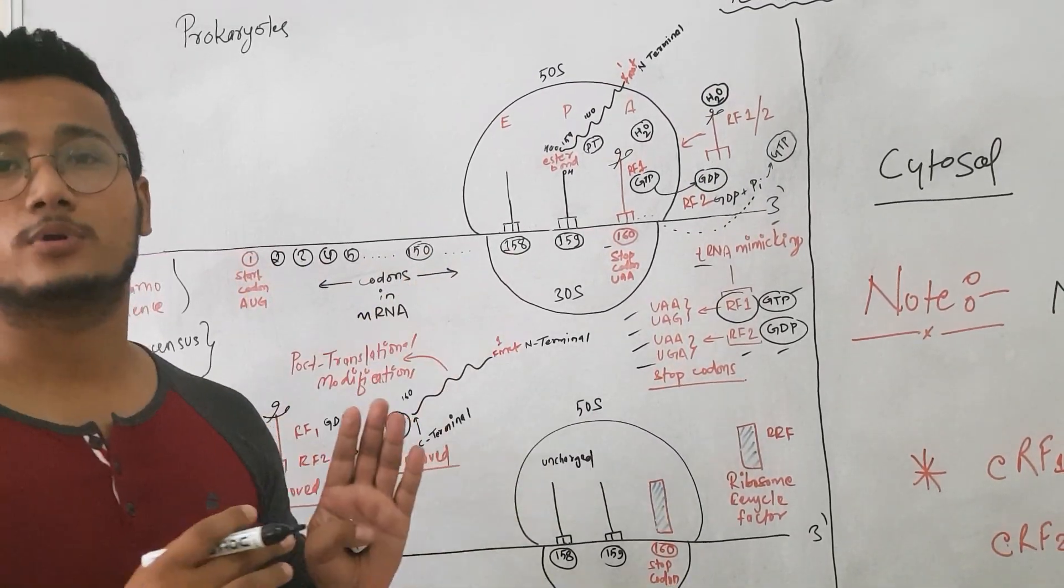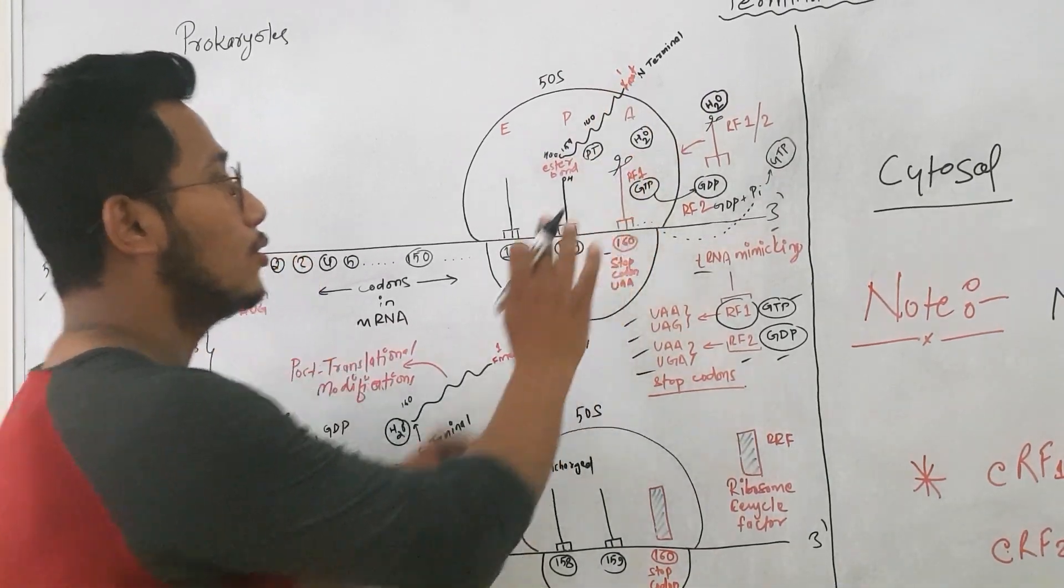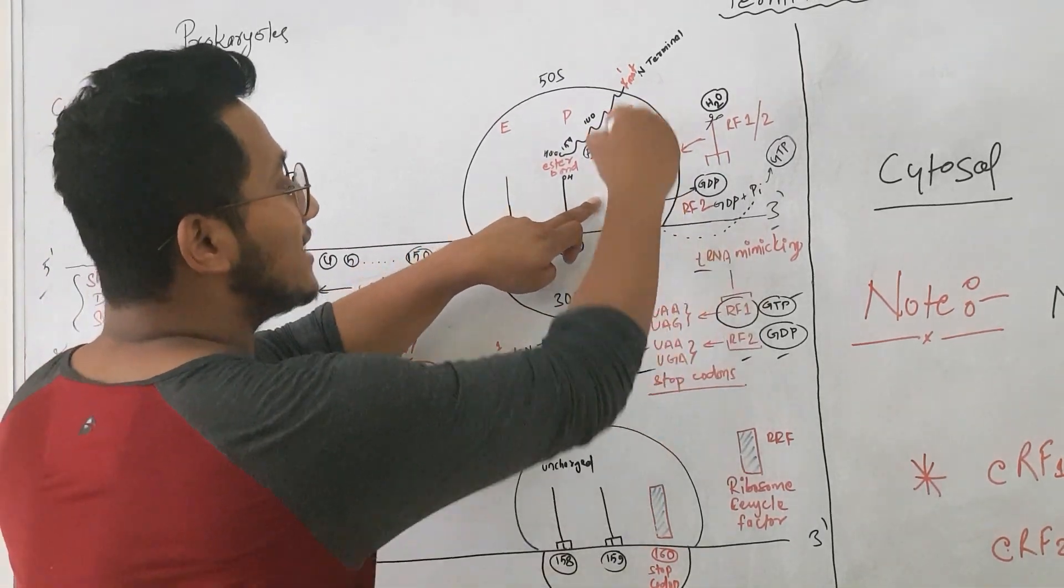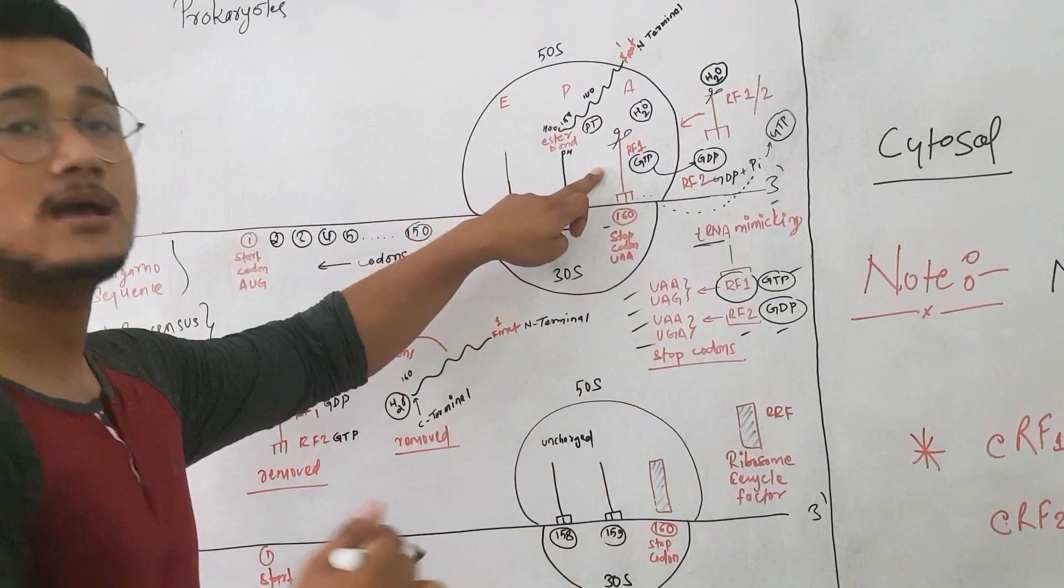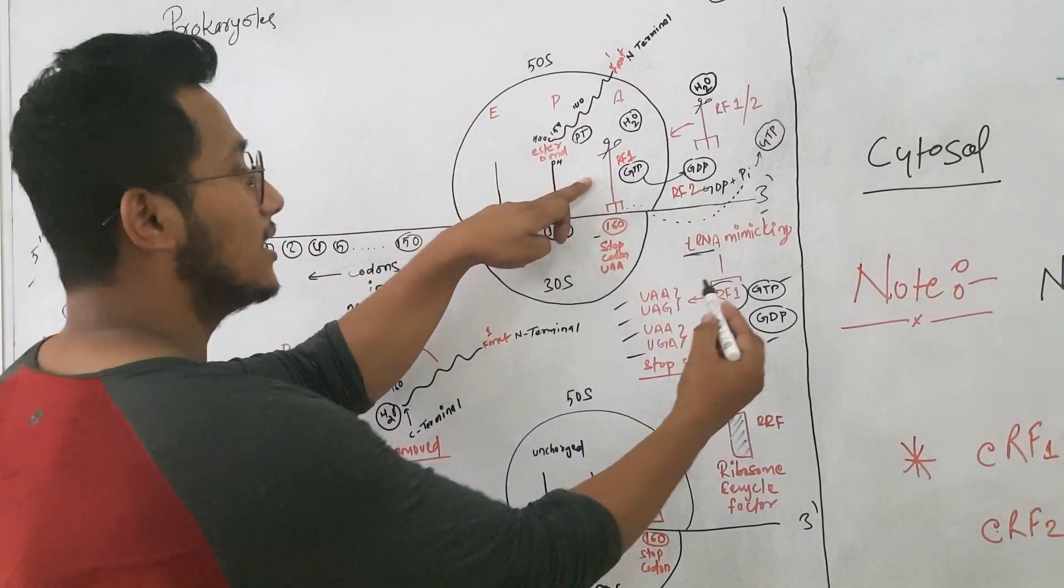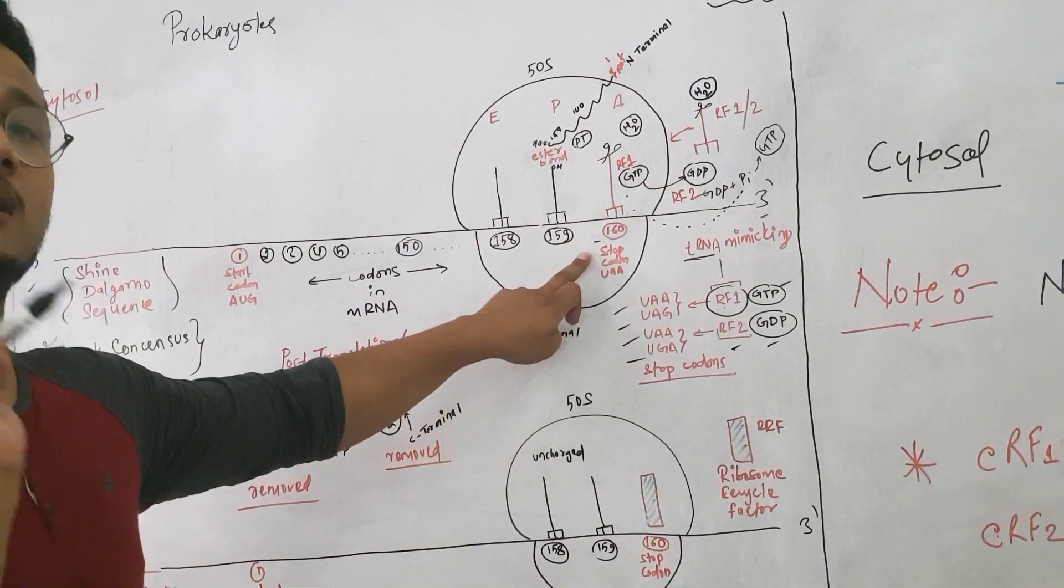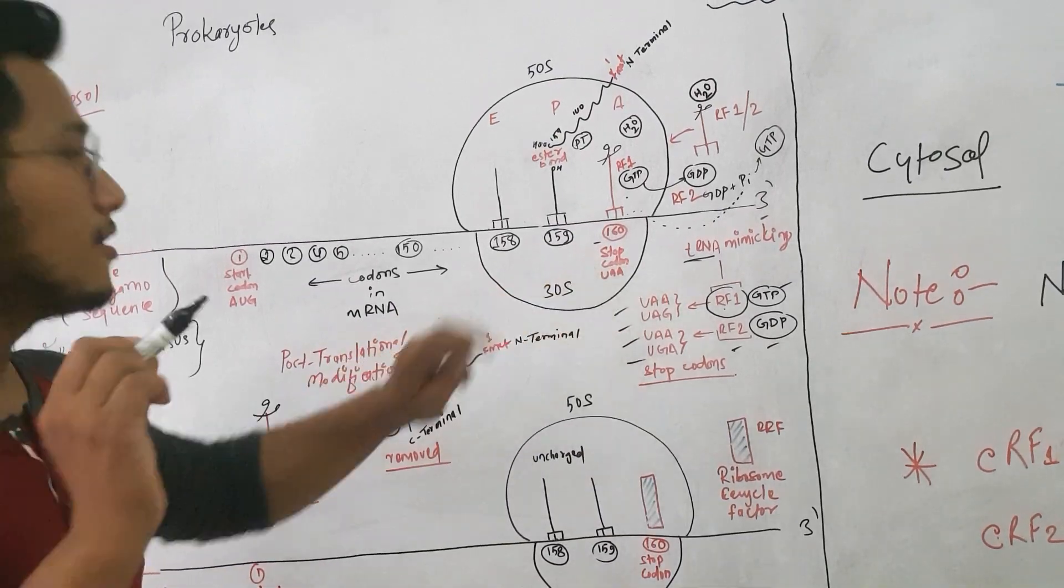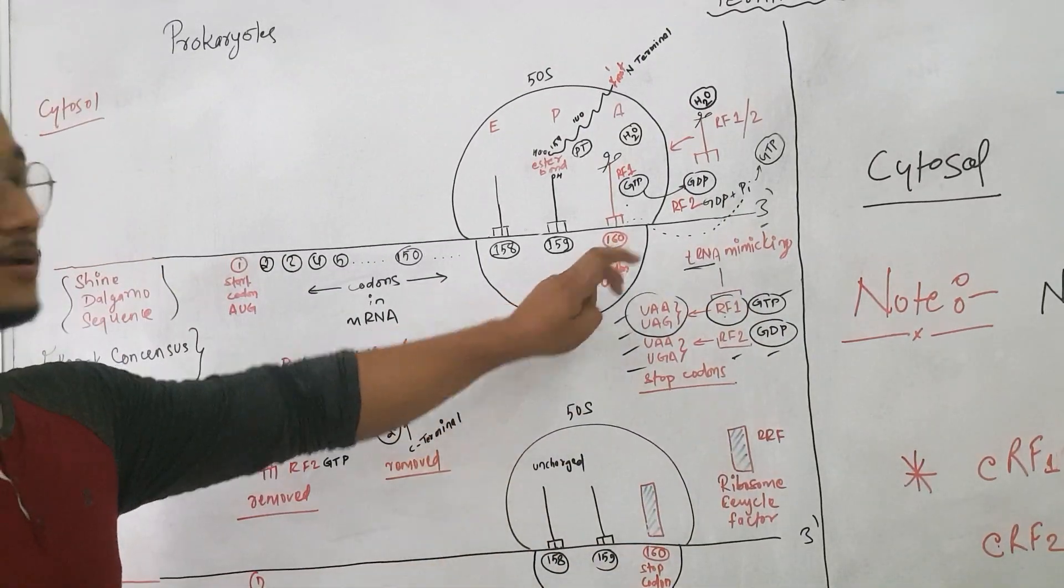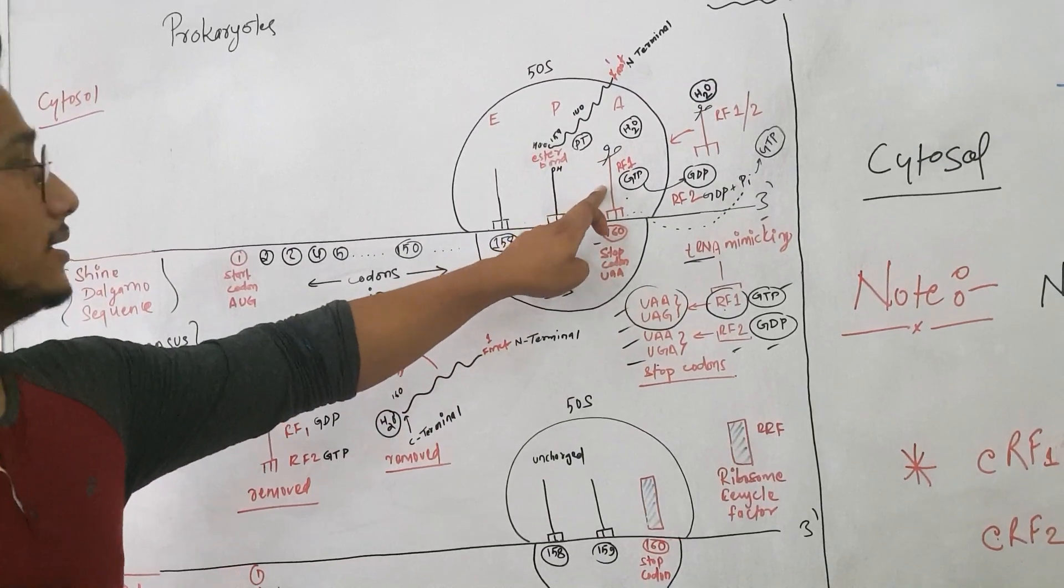So what happens now? We know translation cannot move forward. Obviously, this stop codon A site will be empty. But now what happens is that once the A site is empty, tRNA-like structures—that is, termination factors like RF1 or RF2—can enter into the A site depending upon what is the stop codon. For example, if it is UAA or UAG, RF1 would enter. If it is UGA, then RF2 would enter into the A site.